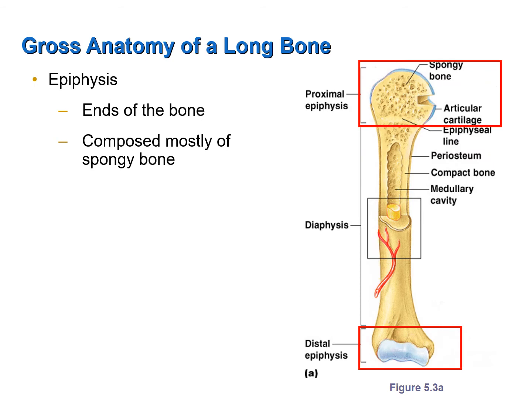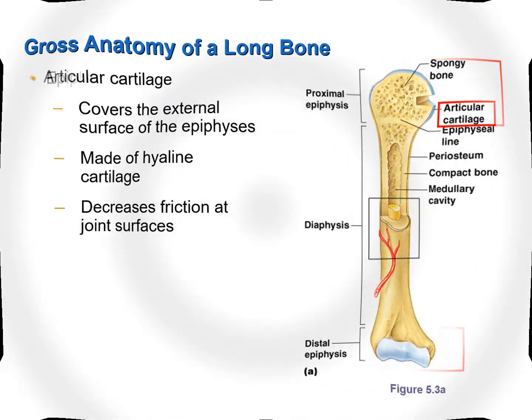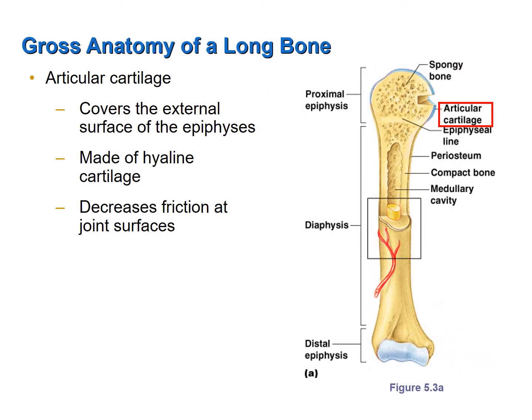The two enlarged ends of a long bone are referred to as epiphyses — a proximal epiphysis and a distal epiphysis. In contrast with the diaphysis, the epiphyses contain mainly spongy bone with a thin layer of compact bone surrounding it. Also, articular cartilage rather than the periosteum covers the epiphyses. Articular cartilage is hyaline cartilage, and its function is to minimize friction at the joint surface. As we age, the articular cartilage tends to become brittle and break down, exposing the underlying bone, which leads to pain, inflammation, and a condition known as arthritis.